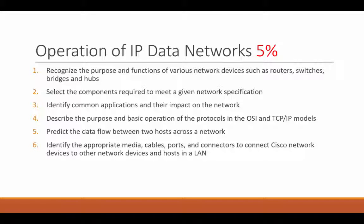We need to identify common applications and their impact on the network. That one's actually rather important because it teaches you what is going to be normal running on your network and what you want to allow, and what isn't so normal and what you want to specifically block. Depending on what technology you have running on your network and what servers and operating systems they're running will depend on the common applications. You need to be able to predict the data flow between hosts across a network using different routing protocols and weighted metrics, and identify the appropriate media, cables, ports, and connectors to connect a Cisco network device to other network devices and hosts in a LAN.